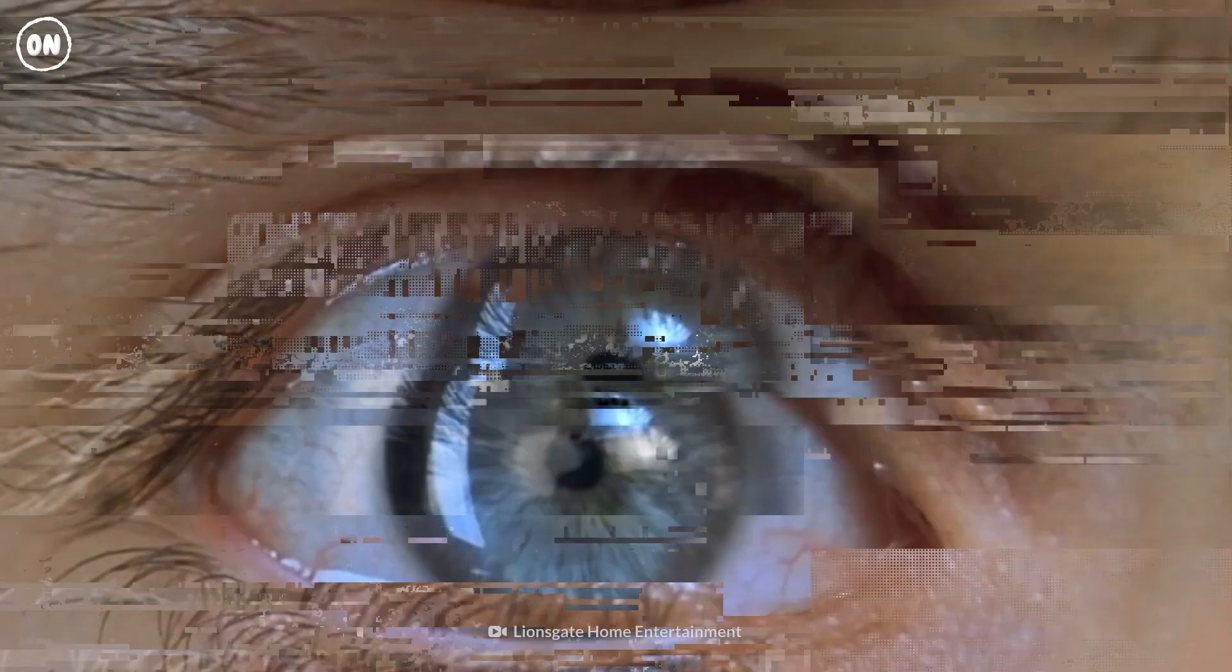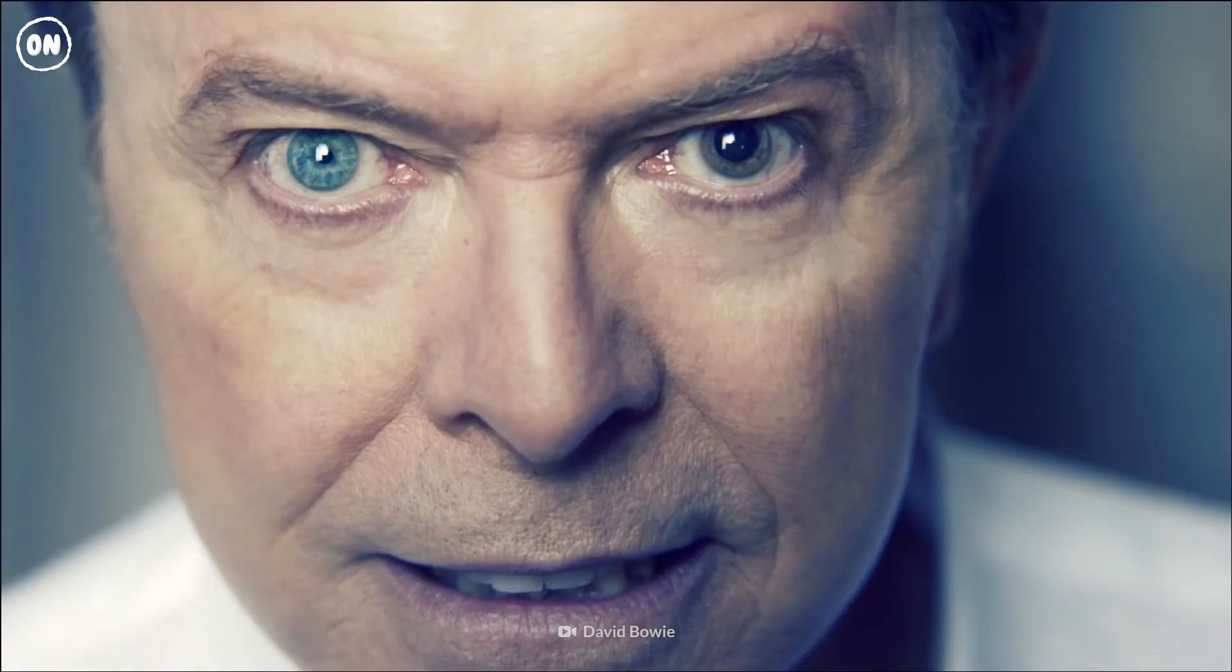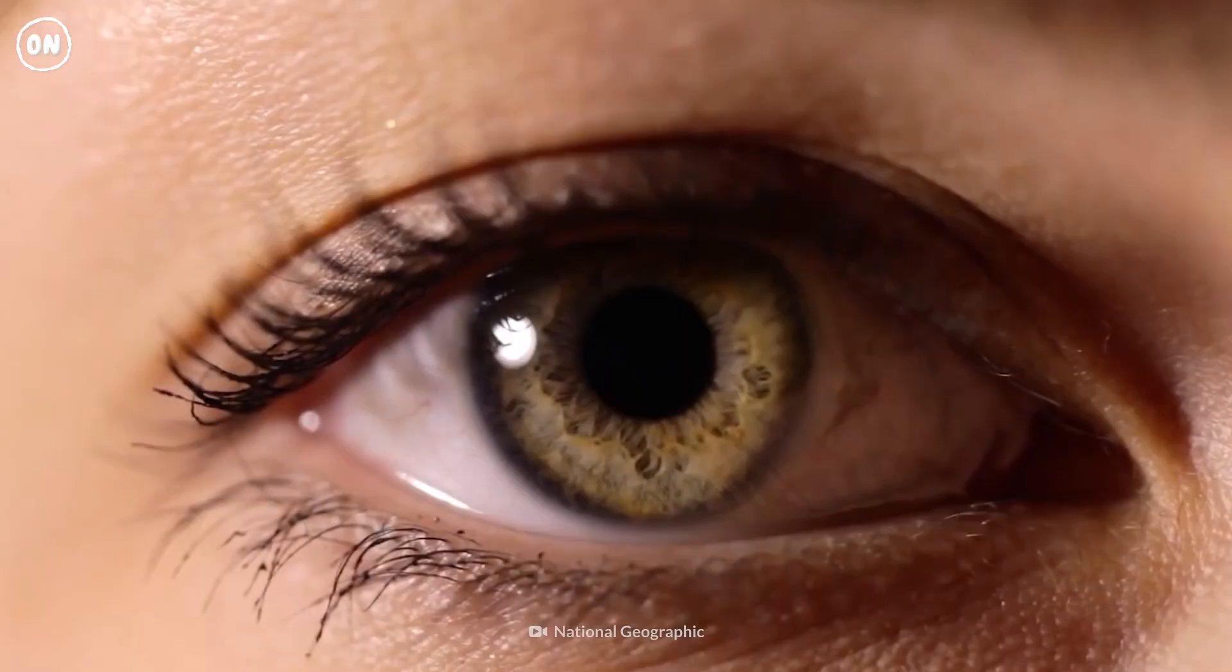That's what happened to David Bowie. A teenage injury caused anisocoria, making his pupils different sizes. As a result, his eyes appear to be of different colors. But certain colors of eyes can be an odd sight as well.